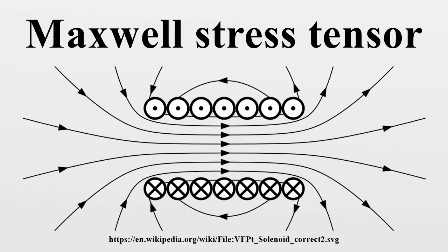If the field is only magnetic, some of the terms drop out, and the equation in SI units becomes simplified. For cylindrical objects such as the rotor of a motor, this is further simplified to an expression where R is the shear in the radial direction and T is the shear in the tangential direction. It is the tangential force which spins the motor. BR is the flux density in the radial direction, and BT is the flux density in the tangential direction.